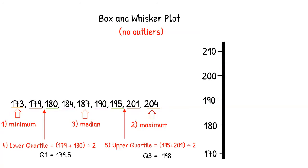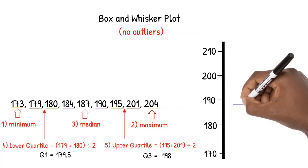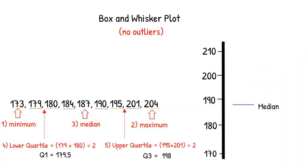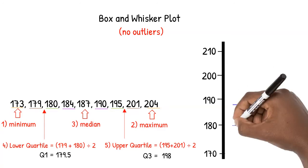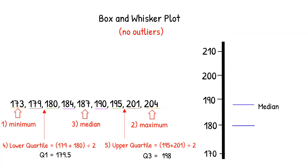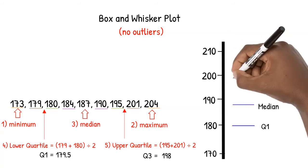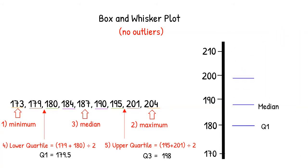To create the box in our display, we draw a horizontal line at the median, 187. The width of this line is up to you. We draw another horizontal line at the lower quartile, Q1, which is 179.5 in this example. A third horizontal line should be drawn at 198, the upper quartile, Q3. Once we have the line for the median and both quartiles, we make our box by joining these three lines.